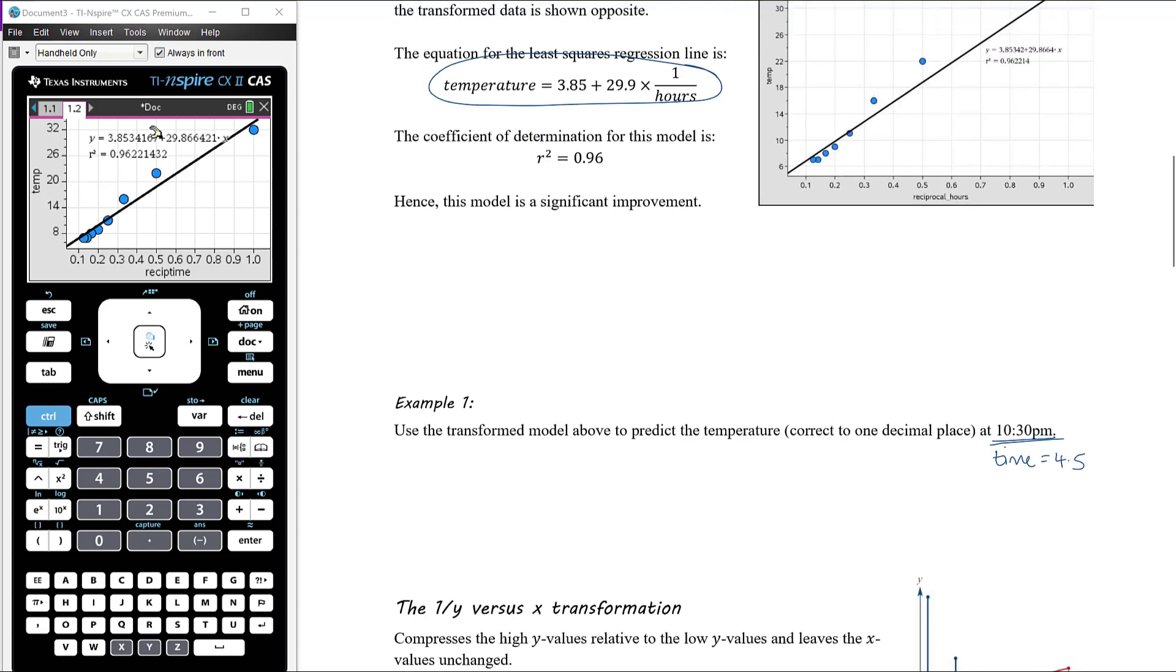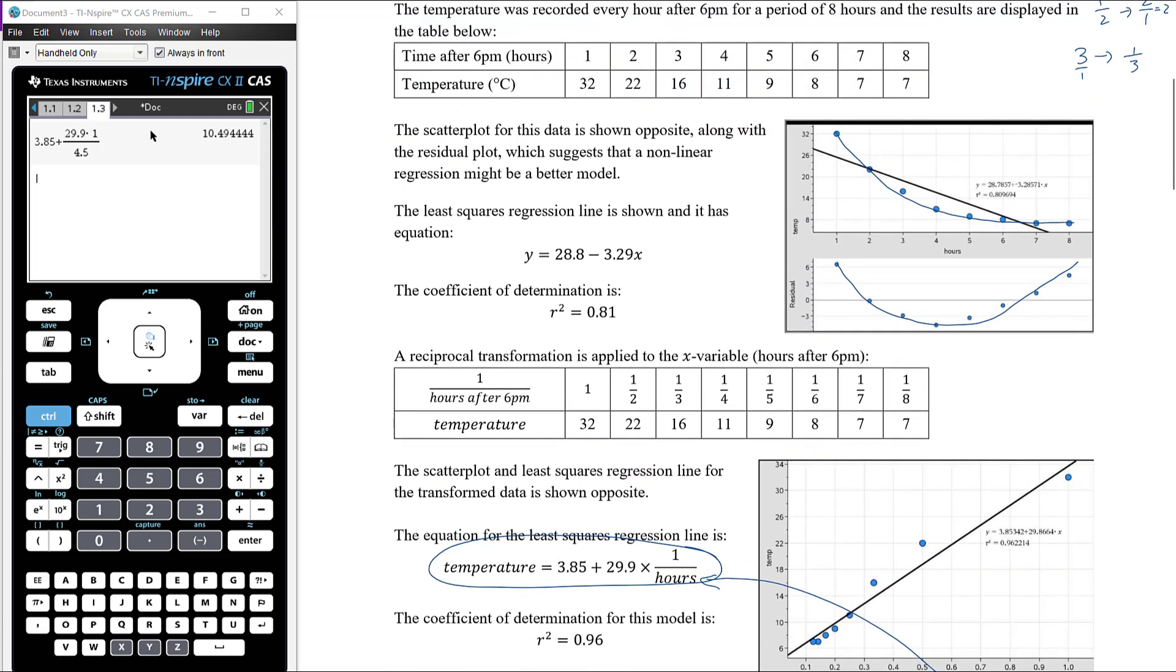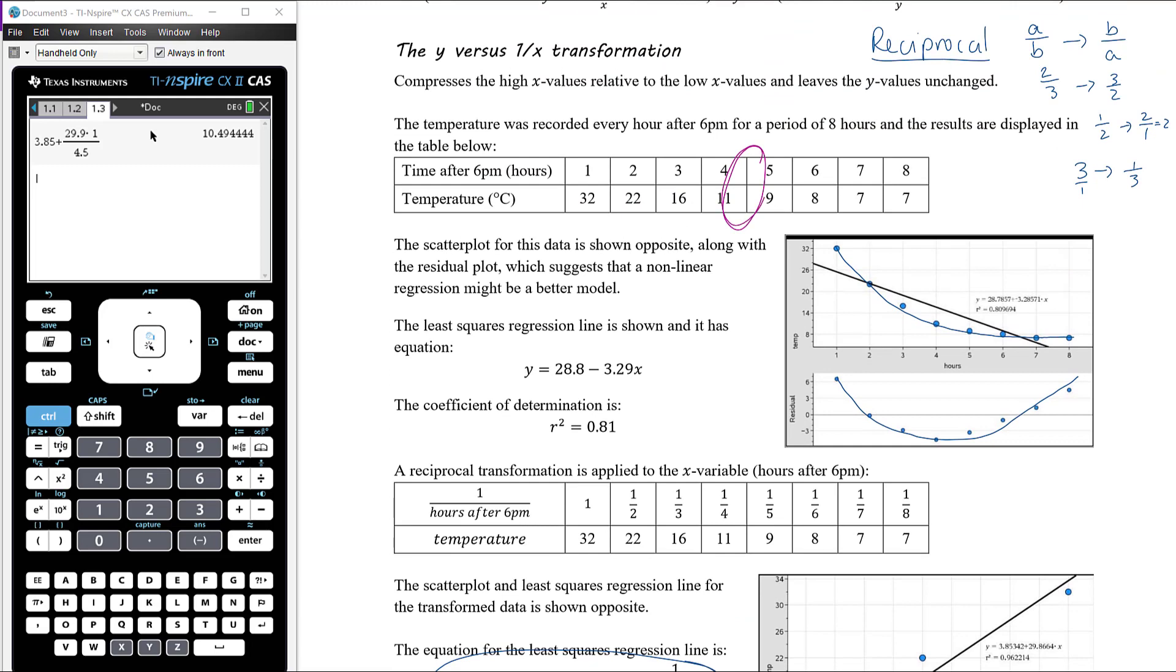We need to put that into our equation. We're going to put that in place of the time or hours as it's written in the equation up there. Our predicted temperature is going to be 3.85 plus 29.9 times 1 divided by 4.5. So 3.85 plus 29.9 times 1 divided by 4.5, and we get a predicted temperature to one decimal place of 10.5 degrees. Again, does my answer make sense? Making a prediction for time 4.5 definitely should be somewhere between 11 and 9 degrees, and it is 10.5, so all good.